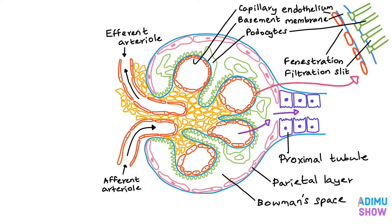We can find another type of specialized cells called mesangial cells, which are located between the basal lamina and endothelium. Mesangial cells are especially common between two neighboring capillaries. They have the ability to contract and are involved in the regulation of glomerular filtration rate. They also play a role in glomerular diseases.